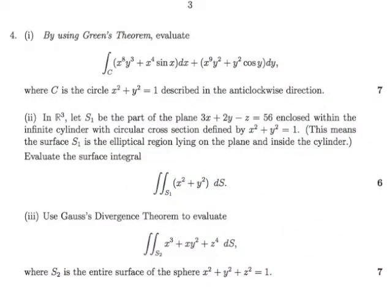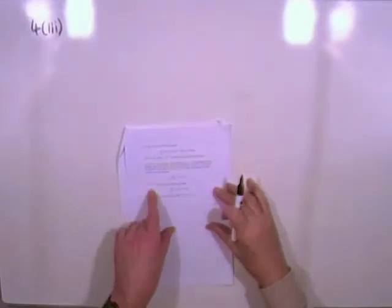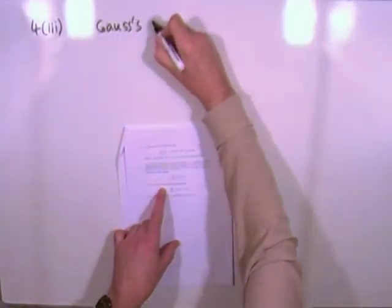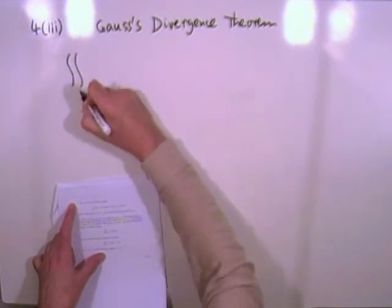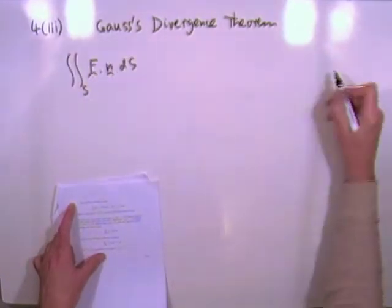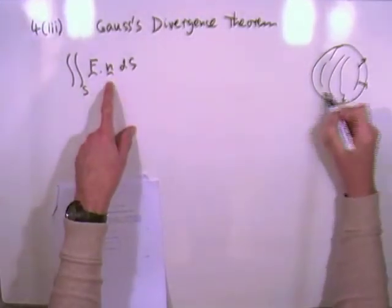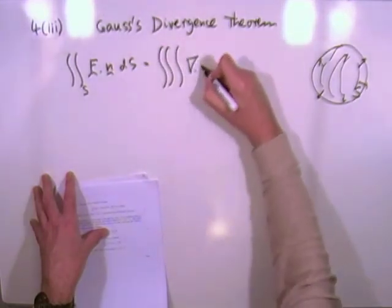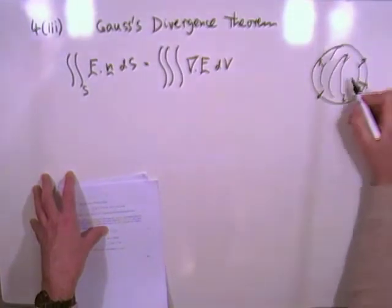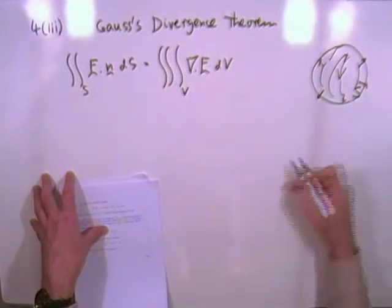So part three, use Gauss's Divergence Theorem to value the surface integral, which is actually the scalar product of some vector field and the normal to the surface, which in this case is the surface of a sphere. Again, a very simple sphere, centred the origin, radius 1. Right, so Gauss's Divergence Theorem, which says that if you've got the summation of the scalar product of a vector field and the normal to the surface over some closed surface, the closed surface looking like this with all the normal vectors coming out, of course, at right angles to the surface, then the summation of all of that is equal to the summation of a scalar field throughout the volume enclosed by that surface, that closed surface.